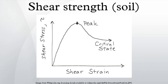For undrained, constant volume shearing, the Tresca theory may be used to predict the shear strength, but for drained conditions, the Mohr-Coulomb theory may be used. Two important theories of soil shear are the critical state theory and the steady state theory. There are key differences between the critical state condition and the steady state condition and the resulting theory corresponding to each of these conditions.